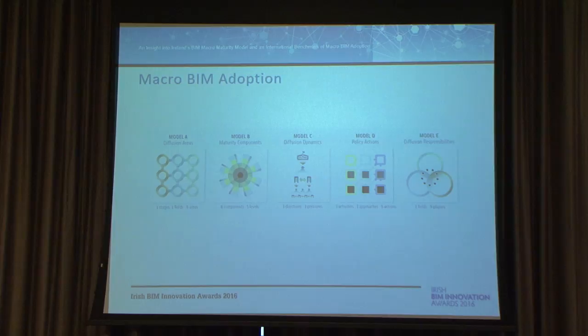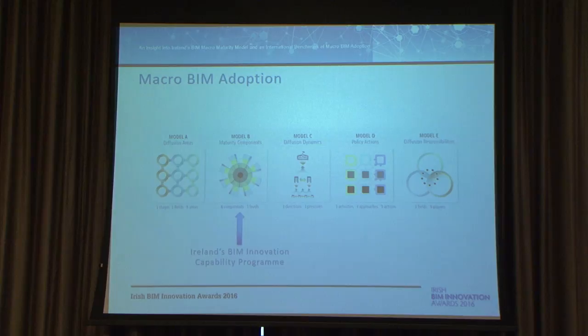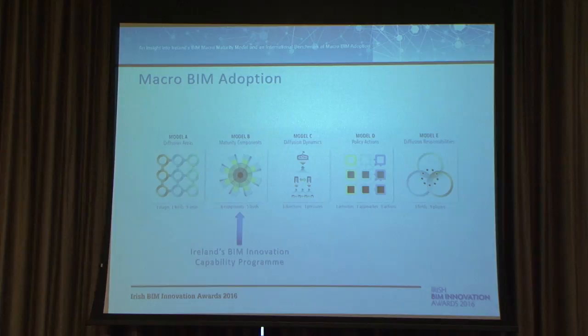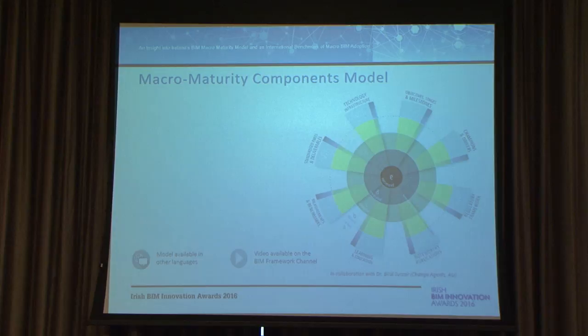The second gap was that there was no data to benchmark — and that's why it's a great initiative, Alan. To address those two challenges, we developed five models. I'll go through the five models one by one. I'll start with what we call the macromaturity model. As part of showing the models, I'll also show results from an international survey we conducted across 21 countries, applying all five models.